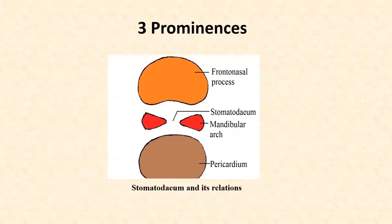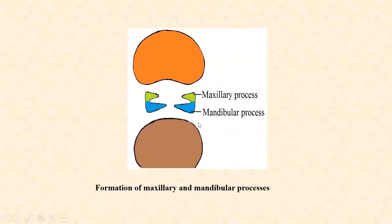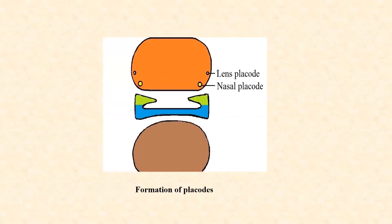Each mandibular arch divides into maxillary and mandibular processes — the green part and the blue part as seen here. The maxillary process and mandibular process are formed from the mandibular arch on either side.